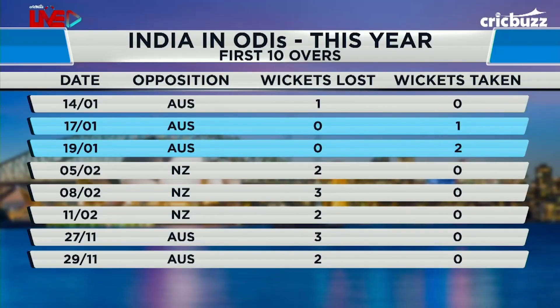One of the stats that likes of Shikhar Dhawan and Shubhman Gill will have been reminded of — we've talked about it in the first two games — is about the two wickets. Not just the two wickets you take with the ball, but the two wickets you don't lose when batting first. Looking at India's ODIs this year, the two games highlighted in blue are the games India won. How many wickets did they lose in the first 10 overs when batting? None. So it's not a coincidence — something they didn't quite do in the first couple of games here either.